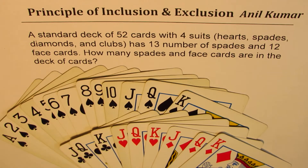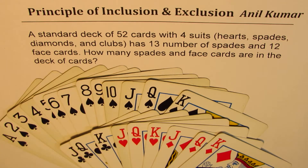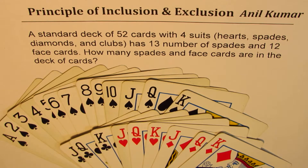I am Anil Kumar, sharing with you an example of counting using the principle of inclusion and exclusion. The problem here is: a standard deck of 52 cards with 4 suits — hearts, spades, diamonds and clubs — has 13 spades and 12 face cards. How many spades or face cards are in the deck of cards?